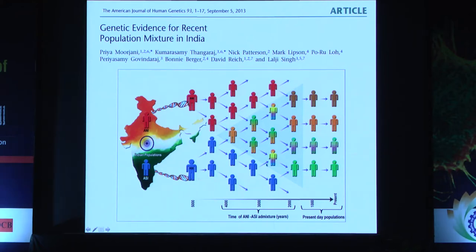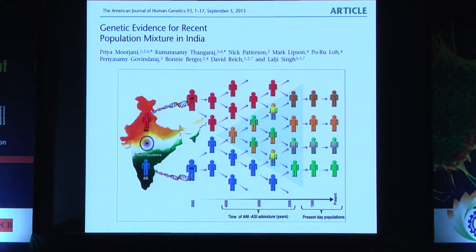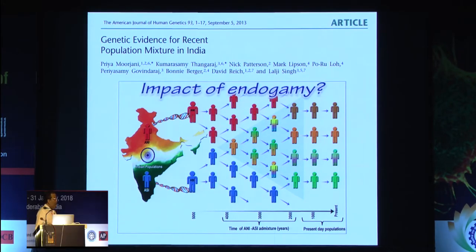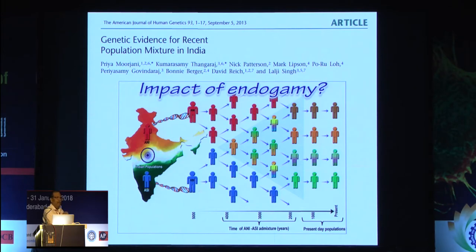After that admixture — meaning for the last 2,000 years — every single population started maintaining endogamy. That is the reason that in the PCA plot every group is very unique, but because of the admixture they still show some genetic affinities. Our interest was to see what the impact of following endogamous marriage practice for the last 2,000 years has been.